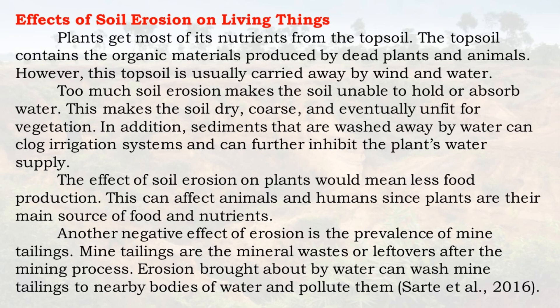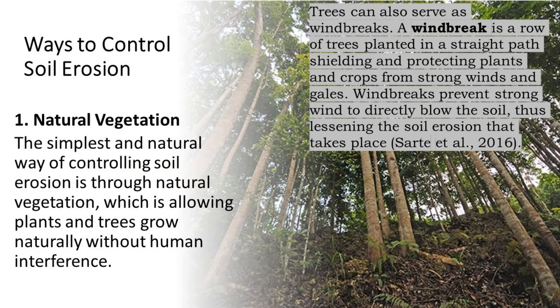Soil erosion effects on plants: soil that is washed away by water can clog irrigation systems and inhibit the plant's water supply. The effect of soil erosion on plants would mean less food production. This can affect animals and humans since plants are their main source of food and nutrients. Another negative effect is the prevalence of mine tailings — mineral wastes left over after the mining process. Erosion from water can wash mine tailings to nearby bodies of water and pollute them.